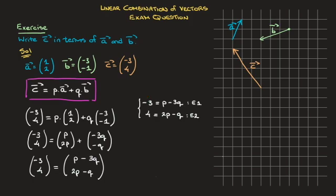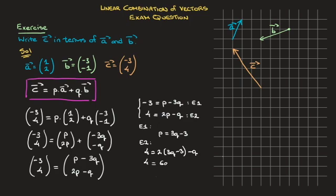We could solve this by elimination or by substitution, and I'll solve this by substitution. I'll start by rearranging the first equation and making P the subject. Using E1, we can rearrange and state that P equals 3Q minus 3. Now, substituting this expression for P into E2, E2 becomes: 4 = 2(3Q - 3) - Q. That becomes 4 = 6Q - 6 - Q, which leads to 4 = 5Q - 6. Adding 6 to both sides gives 10 = 5Q. Dividing both sides by 5, we find that Q equals 2.